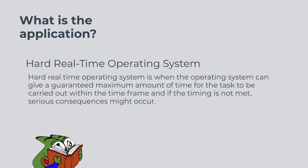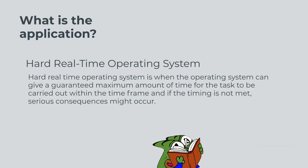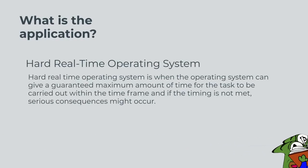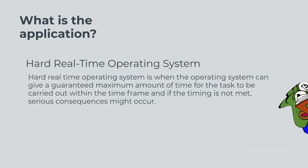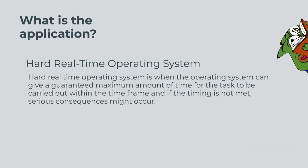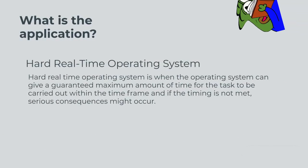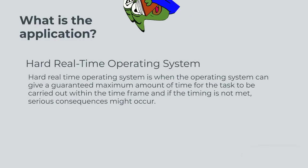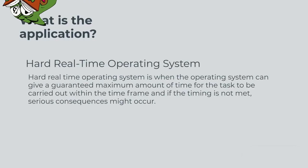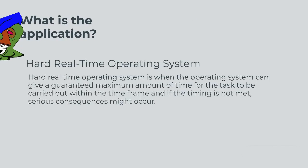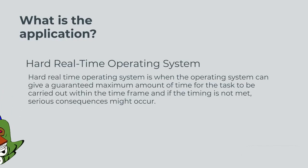What is the application? A hard real-time operating system is when the operating system can give a guaranteed maximum amount of time for the task to be carried out within the time frame, and if the timing is not met, serious consequences might occur.